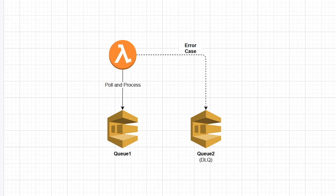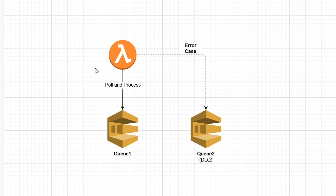So assume we have queue number one set up as an event source for a lambda function, and this lambda function will pull and process messages in this queue. Now if there's an error case — say there's a null pointer exception, a problem with your code or the data being passed in — that message will get sent to a separate queue known as the dead letter queue. After a while this dead letter queue will grow and you'll have a couple thousand messages in there. So after you fix the problem in the lambda function — maybe it's a code change or something with the data — you have all these messages in this queue and you need to move them back into the event source queue so they can be processed by the lambda.